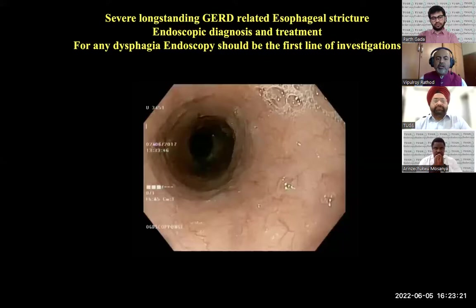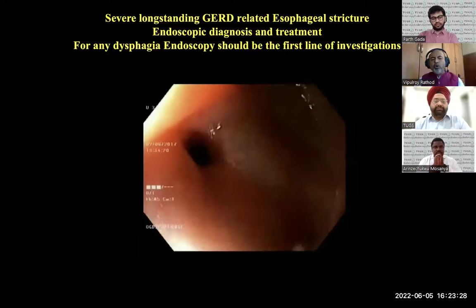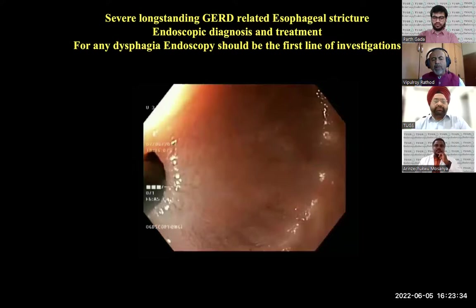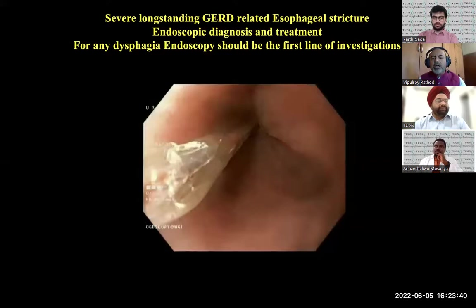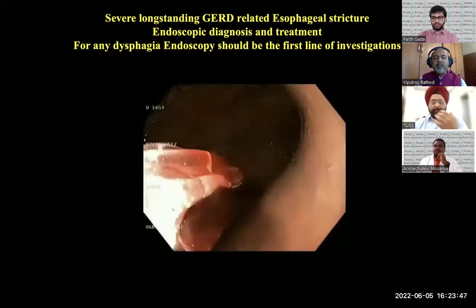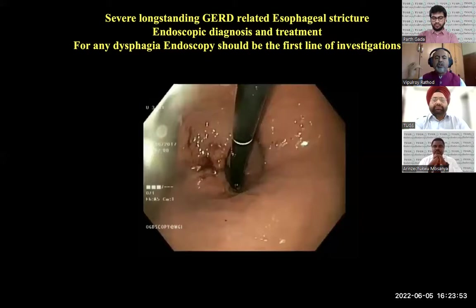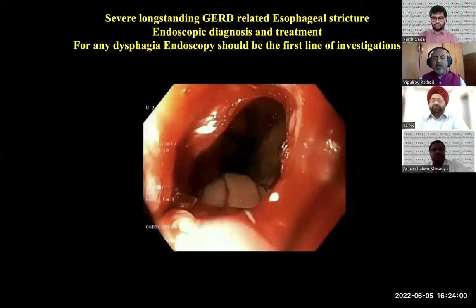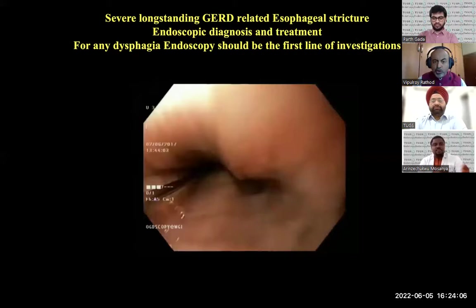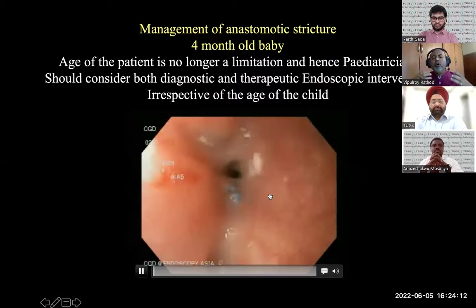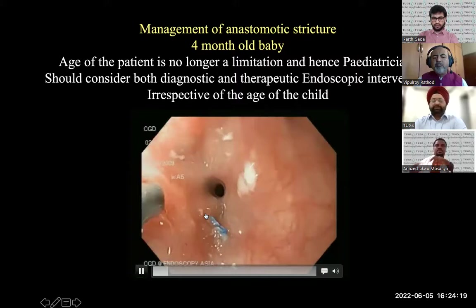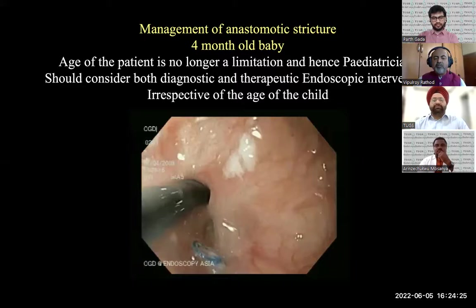Another patient with dyspepsia and intermittent dysphagia showing a pinhole narrowing in the lower end of the esophagus — we always put a guide wire first under endoscopic vision. In 95% of our patients we do not need fluoroscopy guidance for dilatation. Knowing it's a smooth GERD-related stricture, we dilate, and after balloon dilatation the patient can swallow. My first investigation for any dysphagia patient should be endoscopy. Even young children post-esophageal atresia repair with anastomotic strictures can be managed with endoscopic treatment.